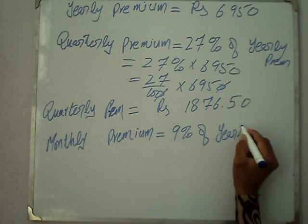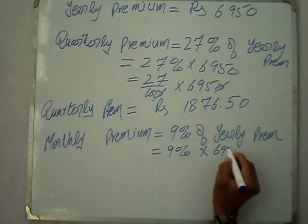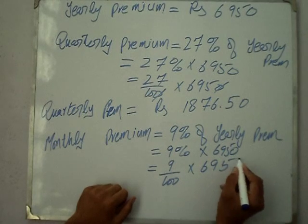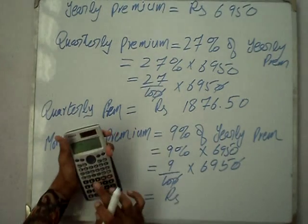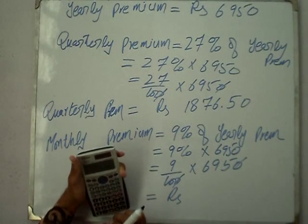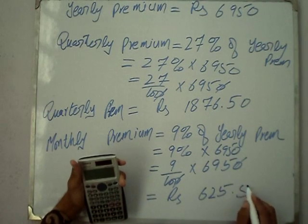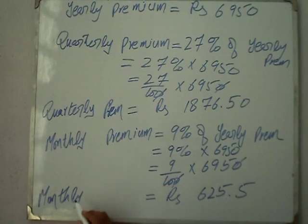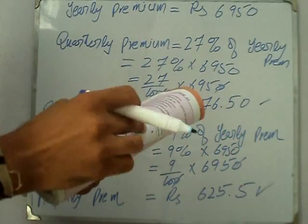Monthly premium is 9% of the yearly premium. So 9% multiplied by ₹6,950: 9 multiplied by 695 divided by 10, which equals ₹625.5. Now we will put all values — yearly, half-yearly, quarterly, and monthly premiums — in a table.